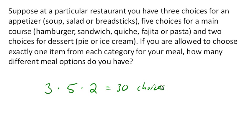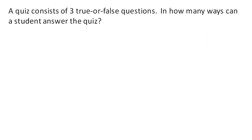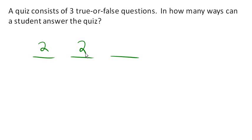Suppose a quiz consists of 3 true or false questions. How many ways can a student answer this? We have 3 questions, and each of those questions has 2 choices. For the first question there are 2 choices, for the second question there are 2 choices, and for the third question there are 2 choices. So altogether there are 2 to the third, or 8 different ways, that a student could answer a 3-question true or false quiz.